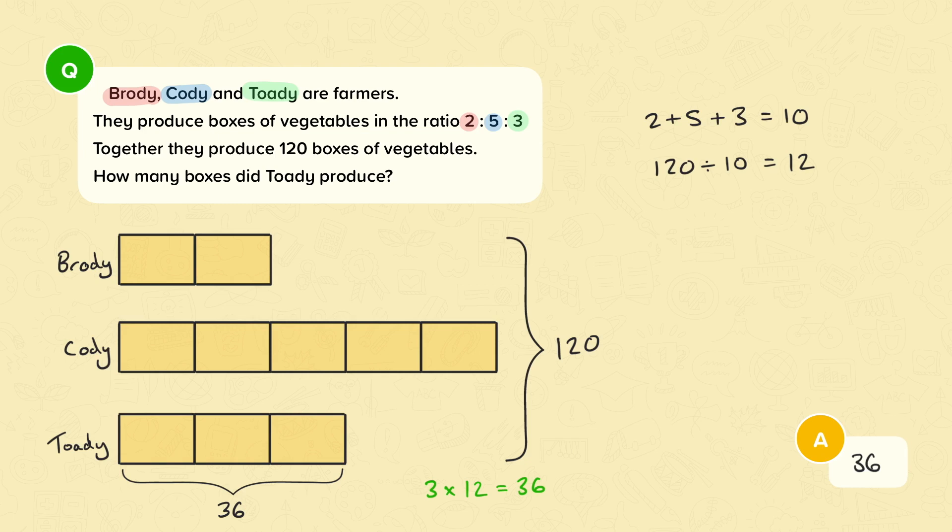Using one part, we can work out how many boxes each person produced. Brodie has two parts, so that is two multiplied by twelve, which is twenty-four. And Cody has five parts, so that's five multiplied by twelve, which is sixty.